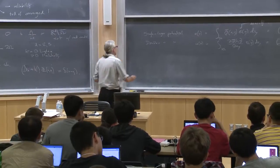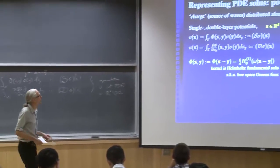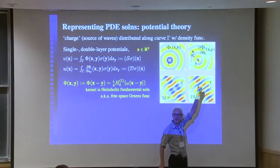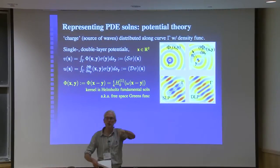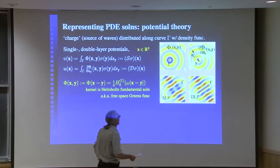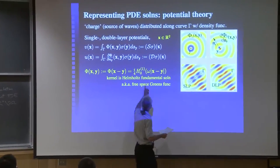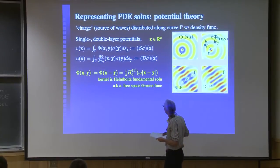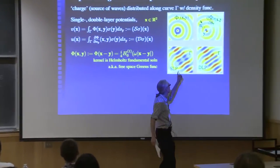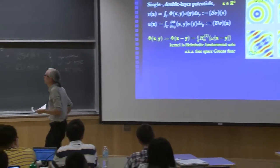In the Helmholtz case the single layer and double layer look like this. Here's the fundamental solution for Helmholtz plotted on a color scale, and here's the normal derivative — it looks like a dipole. The first is if you dip your finger into a pond at frequency k; the second is if you dip it in and shake it back and forth at frequency k. You notice that the single layer is continuous (blue on both sides), while the double layer has a jump (blue on one side, red on the other).